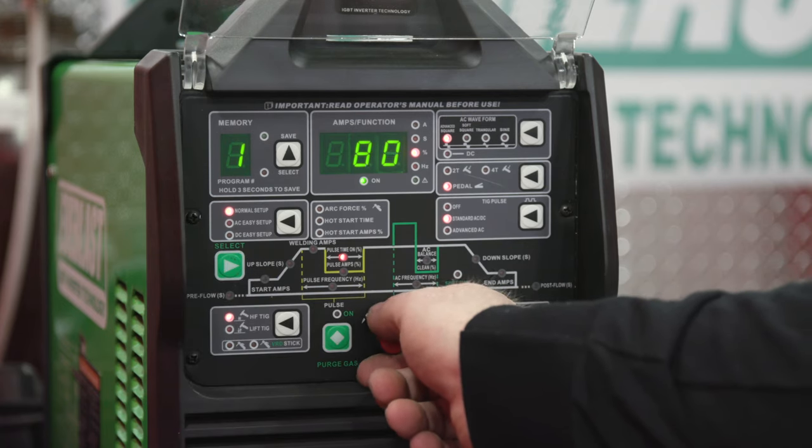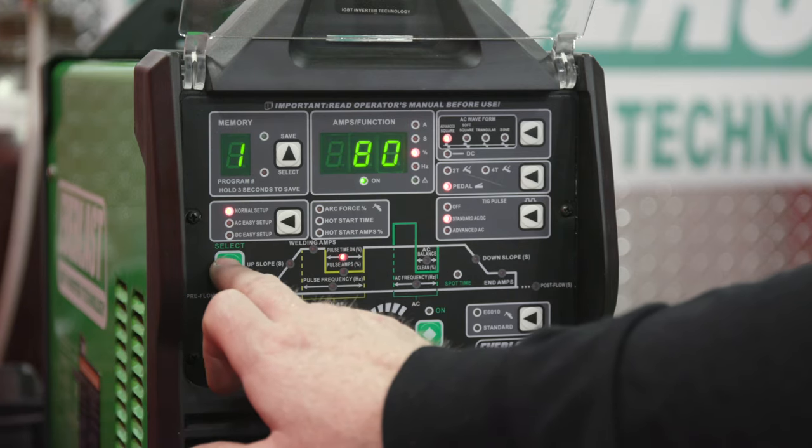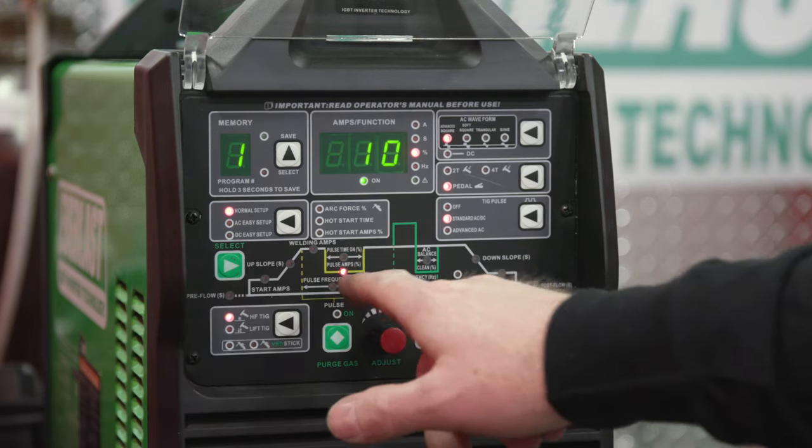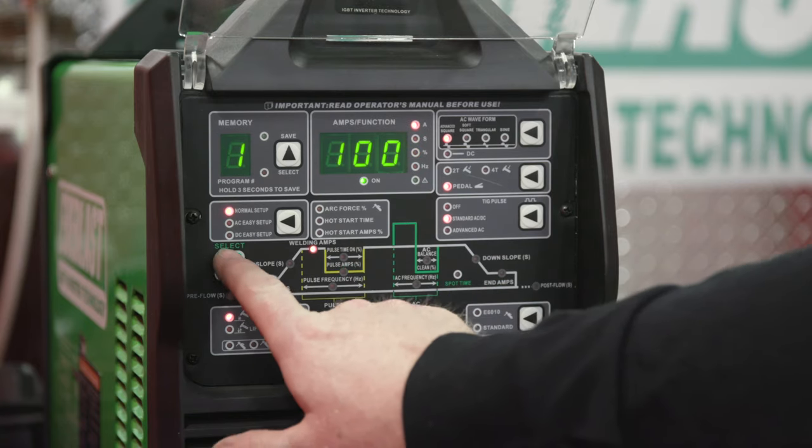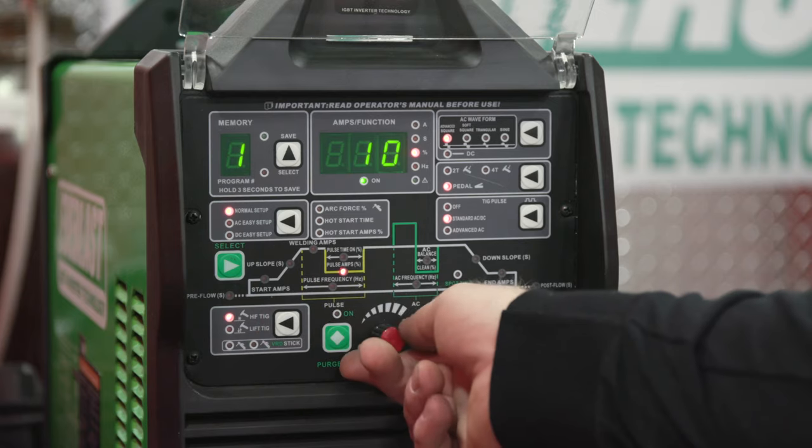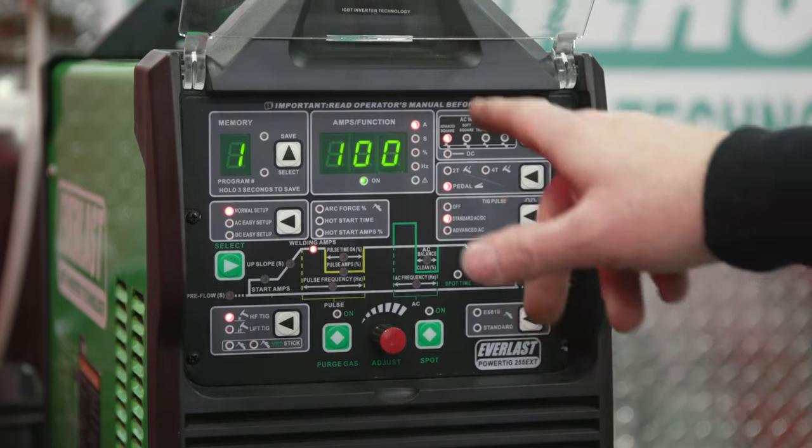Then we'll go in and we'll do pulse time on. We'll set this one at 80, so 80% of the time we're going to be at that 100 amps. Now if you push it again, we get the pulse amps, which is our background amps. So what percentage of the max amperage are we going to get? And we're going to leave that at 10%. So 10% of 100 is 10 amps.